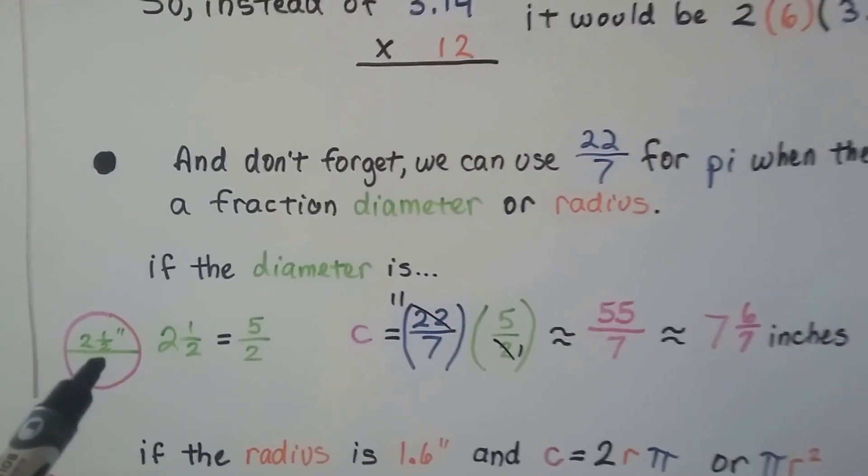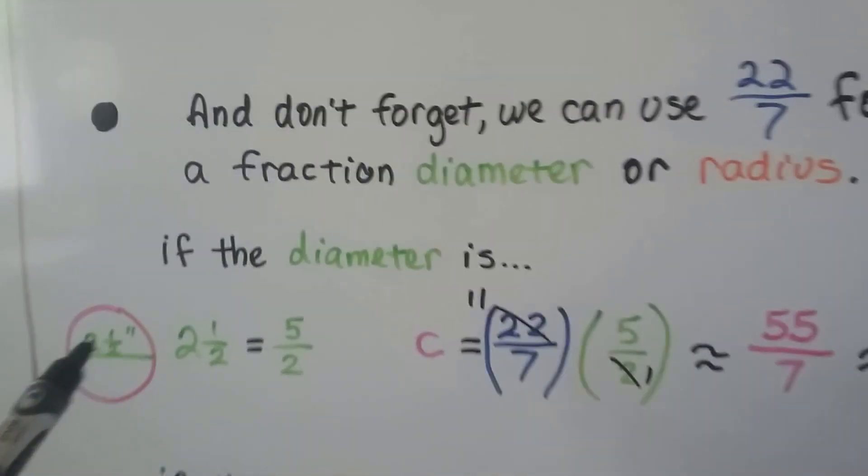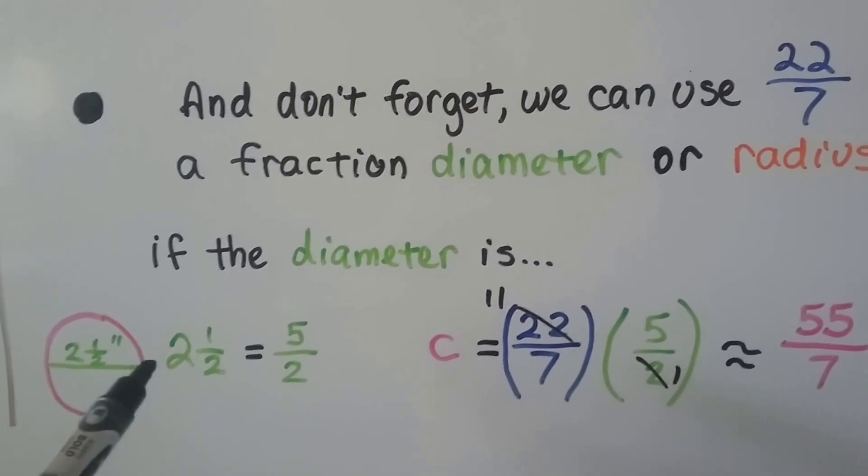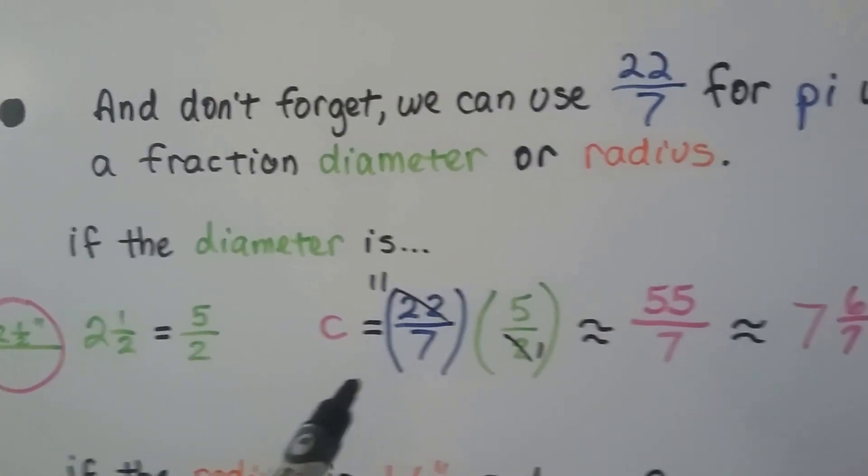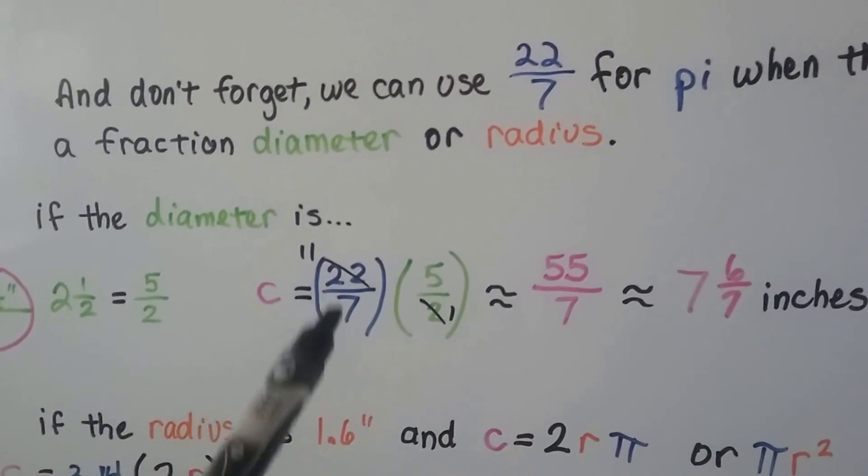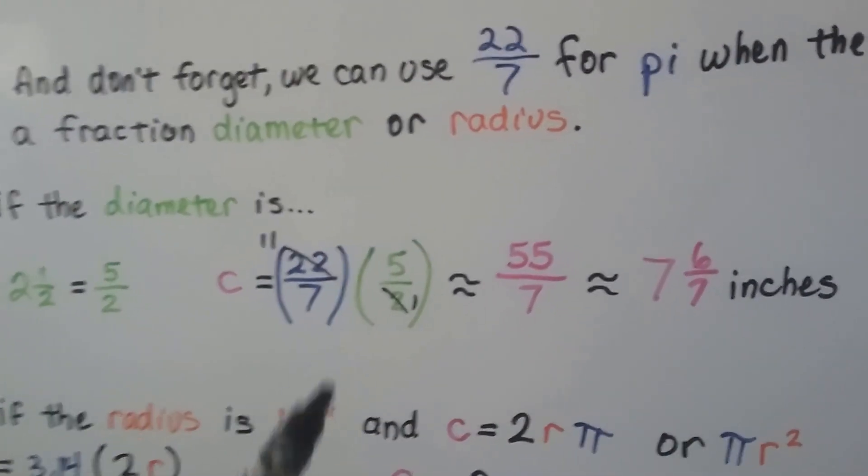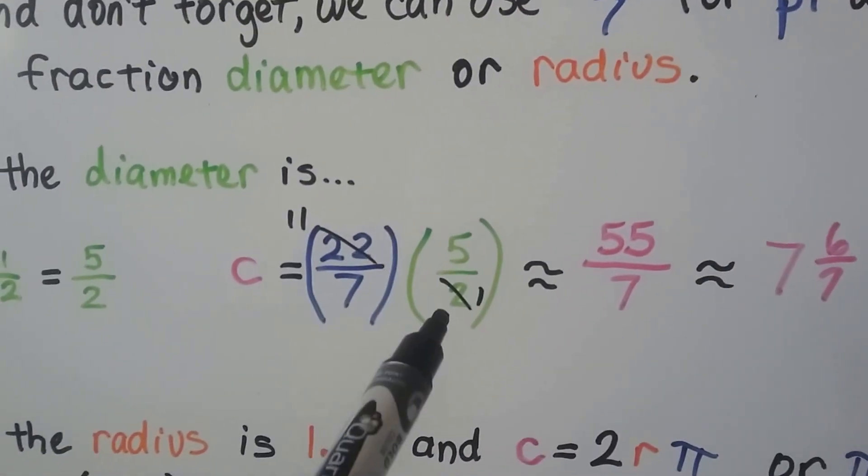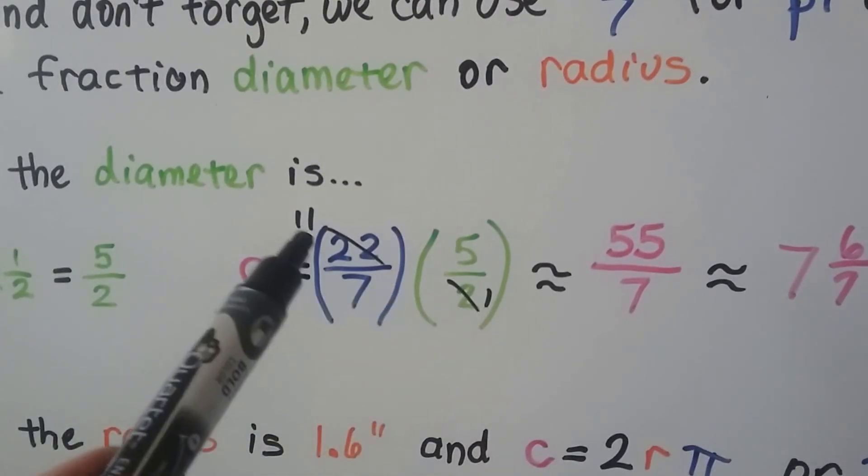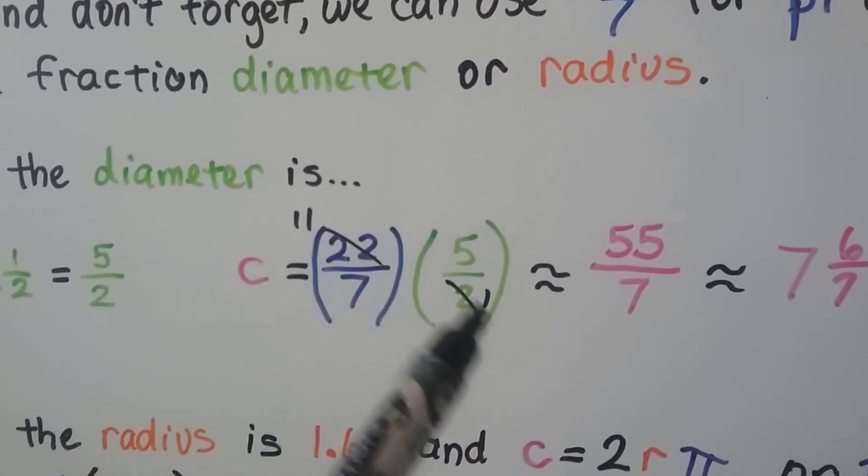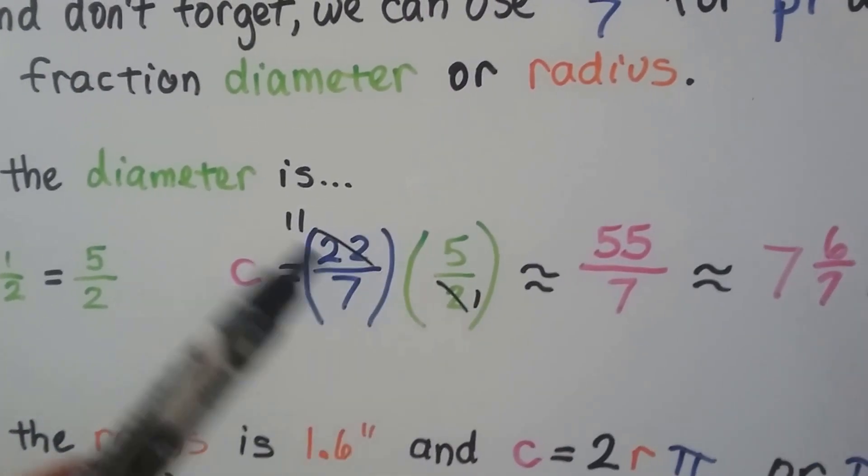And don't forget we can use 22 sevenths for pi when there's a fraction diameter or radius. So let's say the diameter is two and a half inches. From end to end, it's two and a half inches. We write it as an improper fraction. It's five halves. And we multiply it by the 22 sevenths for pi. And if you look, there's one two here and there's 11 twos here. So we can cross cancel these as a 1 and an 11.